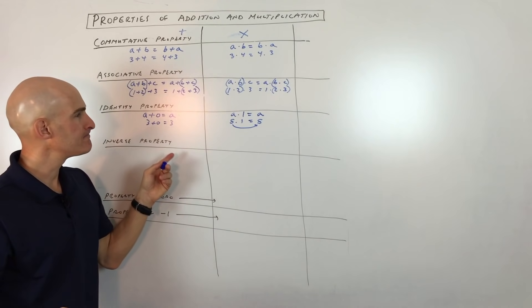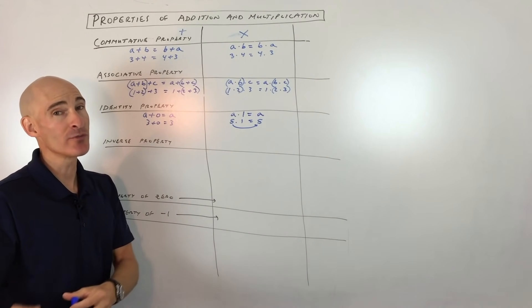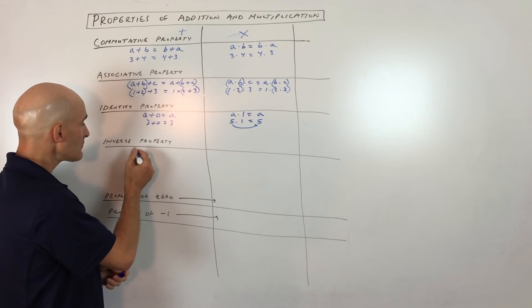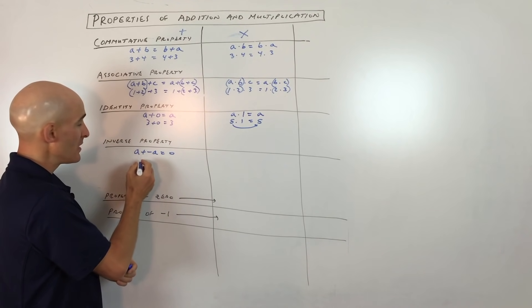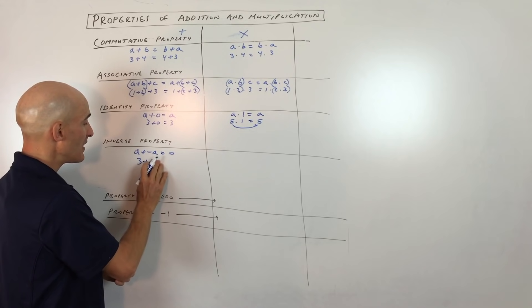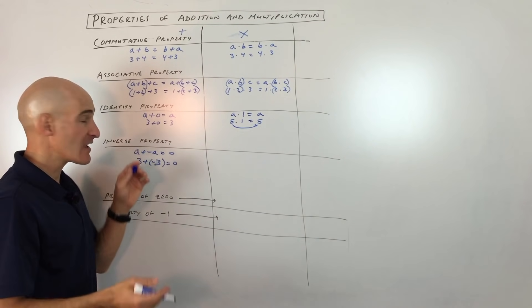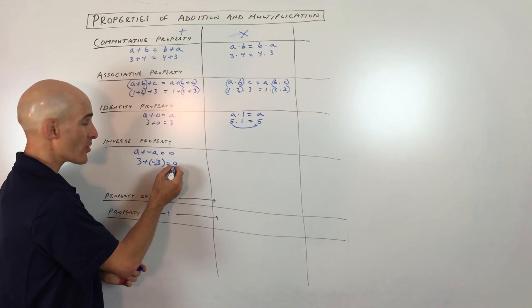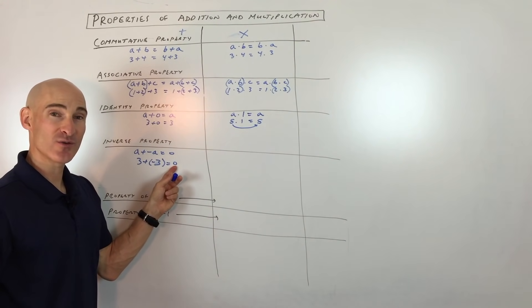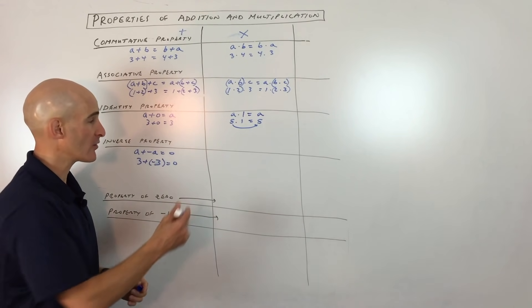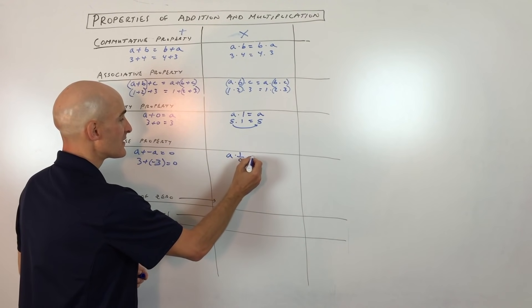A lot of students ask: isn't there one for subtraction or division? These properties only apply to addition and multiplication. Now the inverse property — A plus negative A equals 0. If you take any number and add the negative quantity, they undo one another — they're the inverse of each other and you get 0. Like if you walk forward three steps and then backward three steps, you're back to where you started, at 0. So inverse is like undoing.